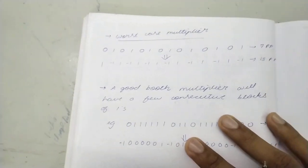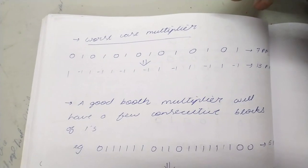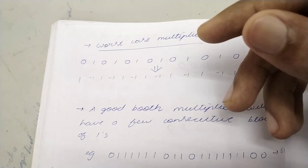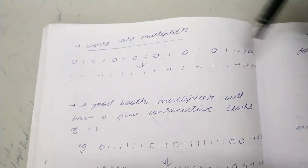Now let's see a case of the worst case multiplier. When will it come? The worst case multiplier is when normal multiplication has lesser number of partial products than the Booth algorithm. When does it happen? It does happen.